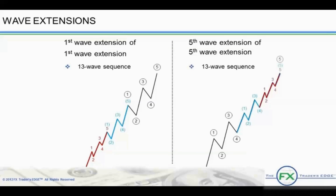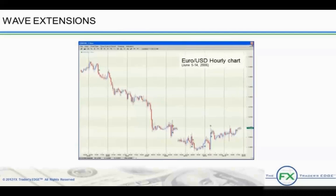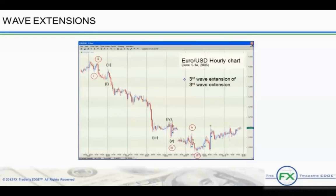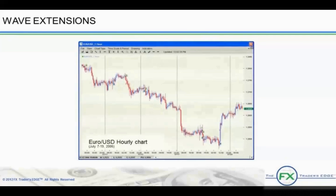It is important to understand extensions so as not to call the end of a 5-wave sequence prematurely. This is an example of a wave extension in the EURUSD hourly chart from June 5, 2006 to June 14, 2006 — a 5-wave sequence that appears to go on and on. When we look at it more closely, we see it is a third wave extension of a third wave extension with 13 subwaves. While trading this sequence, it is often difficult to recognize the end of a 5-wave sequence, especially if we are in extension mode. We will learn ways to recognize the end of a trend further on in this course. In this EURUSD hourly chart from July 7, 2006 to July 19, 2006, you can see the third wave extension of the third wave extension.